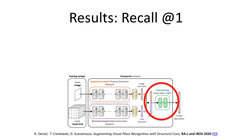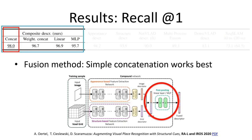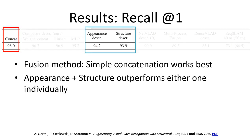First of all, our results include a comparison of different fusion methods to combine the two input modalities. It turns out that the simplest one — concatenation of globally pooled deep convolutional features — results in best performance. Next, we observe that for all of the evaluated sequence pairings, our composite descriptor benefits from fusing both visual and structural cues, and outperforms descriptors encoding features of only one of the two input modalities.